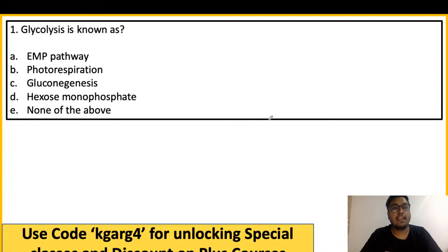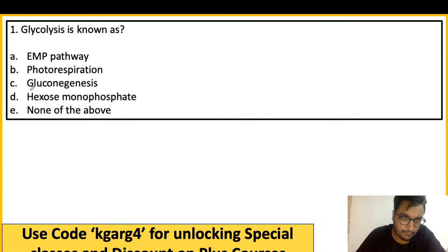Question 1 from IBPS AFO 2012: Glycolysis is also known as — Option A: EMP pathway, Option B: Photorespiration, Option C: Gluconeogenesis, Option D: Hexose monophosphate, Option E: None of the above. What is glycolysis also known as?